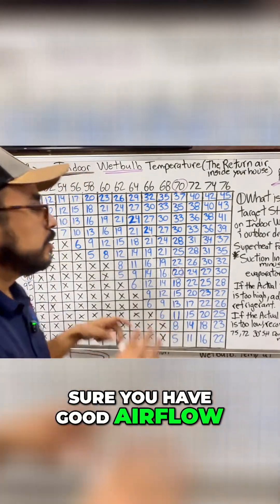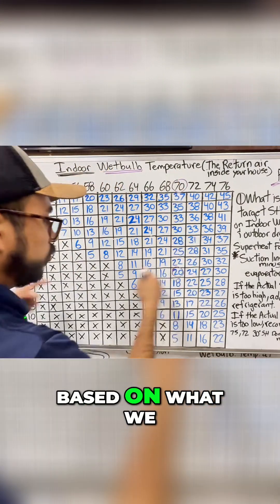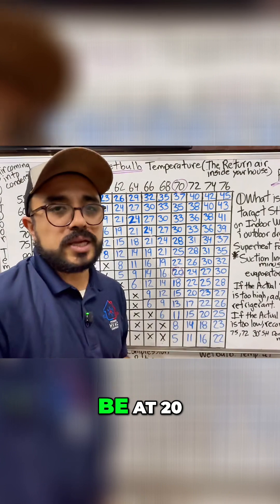You have to make sure you have good airflow, but after you checked all of it, you're gonna get a target superheat of 20 based on what we did, but that doesn't mean the current superheat will be at 20.